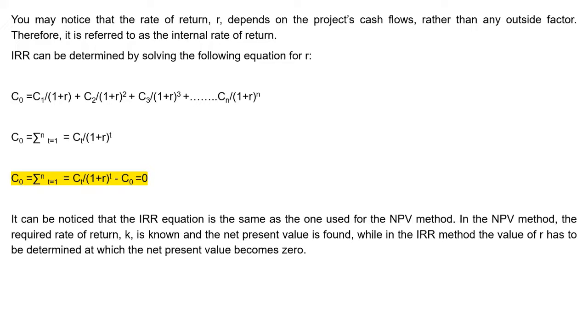The formula to calculate the internal rate of return is: C0 equals C1 divided by (1+r), plus C2 divided by (1+r) squared, plus C3 divided by (1+r) cubed, and so on for each year of the investment.